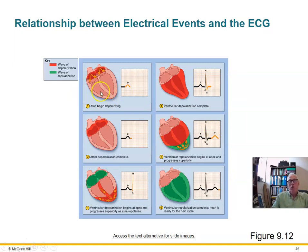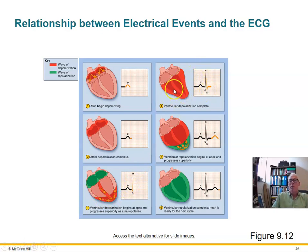Here's a visual walkthrough: the P wave forms as the atria depolarize, then there's a flat interval while the AV node delays. The wave of depolarization then shoots down into the ventricles and the myocardium depolarizes, forming the QRS complex. The ventricular myocardium remains depolarized for a significant period — the ST segment — and then a wave of repolarization forms the T wave. The whole heart returns to resting membrane potential, and we wait for the SA node to trigger the next beat.